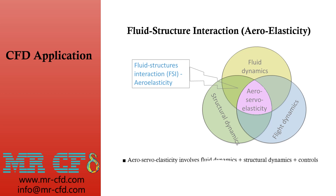Aeroservoelasticity involves fluid dynamics, structural dynamics, plus controls. The control gains are related to control surfaces — for example, deflections in the rudder, elevator, and other surface controllers. These deflections affect the structural parts of the airplane body, including the fuselage and wings. The changes are driven not only by control surface movement but also by the fluid dynamics around the body and the feedback of control surface deflections on the structure itself.